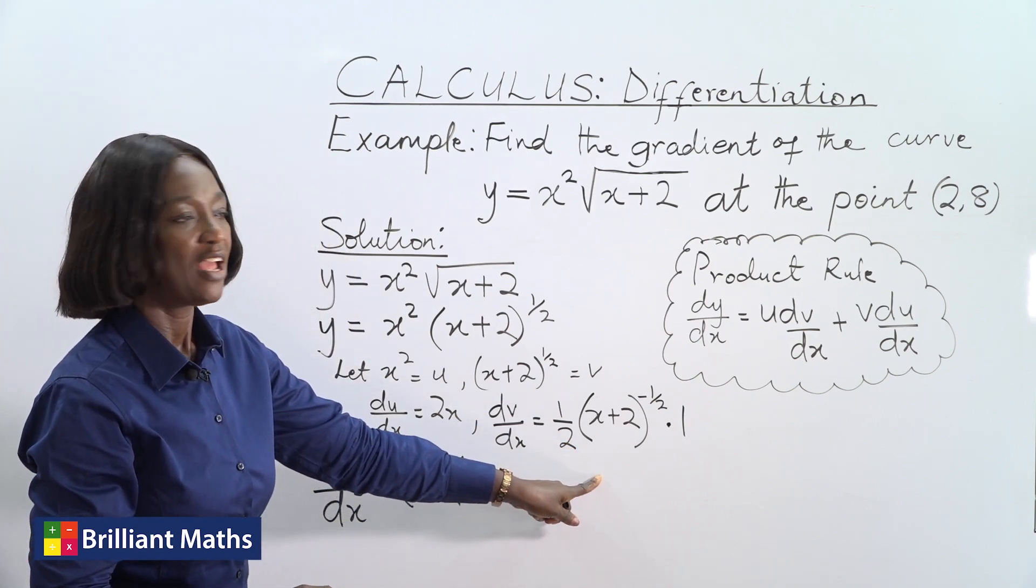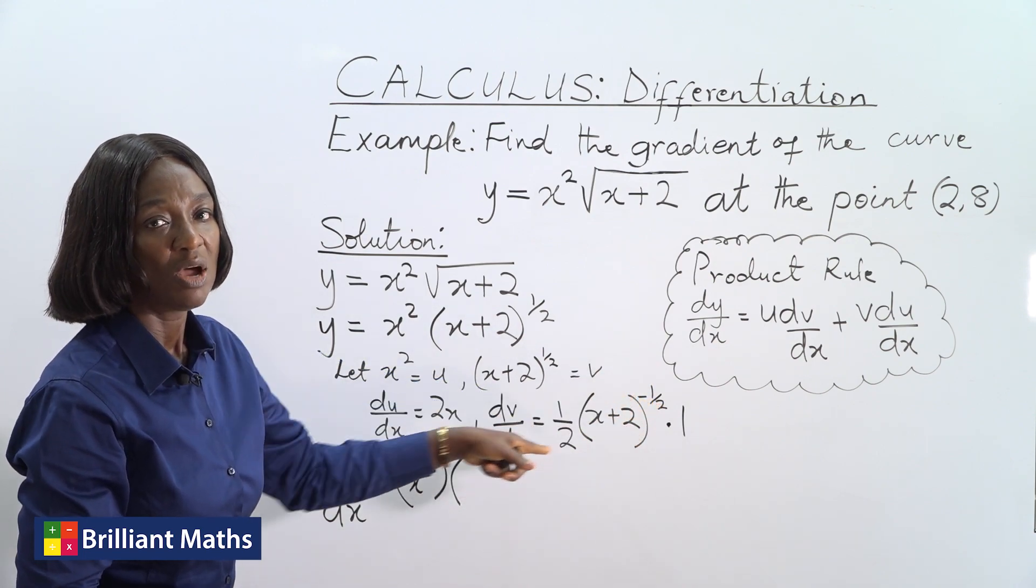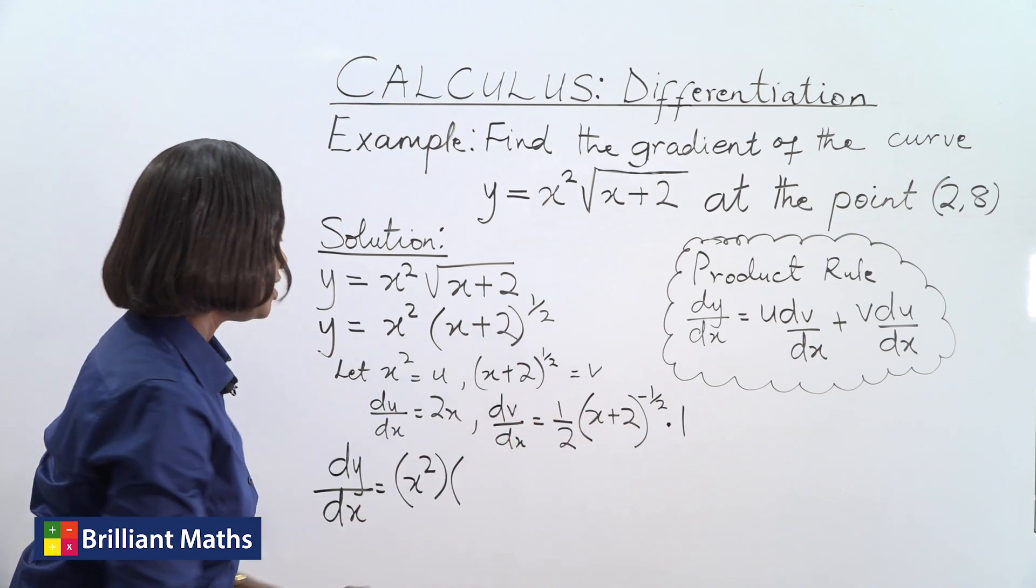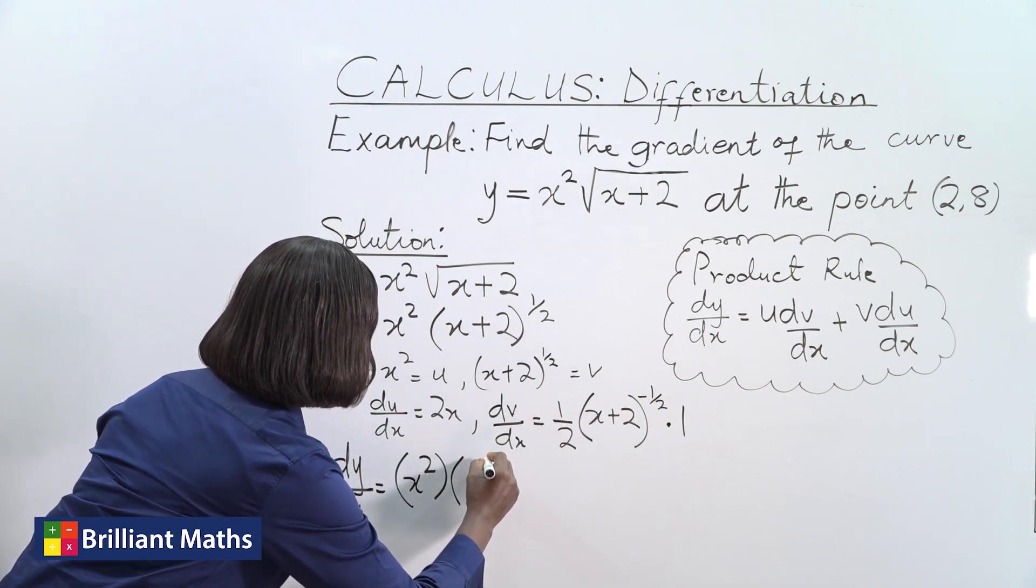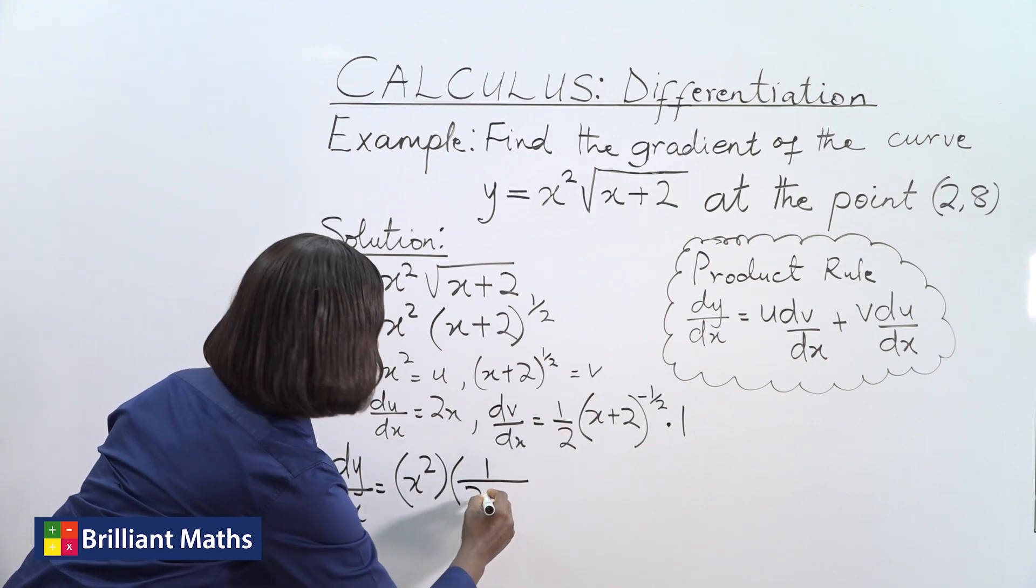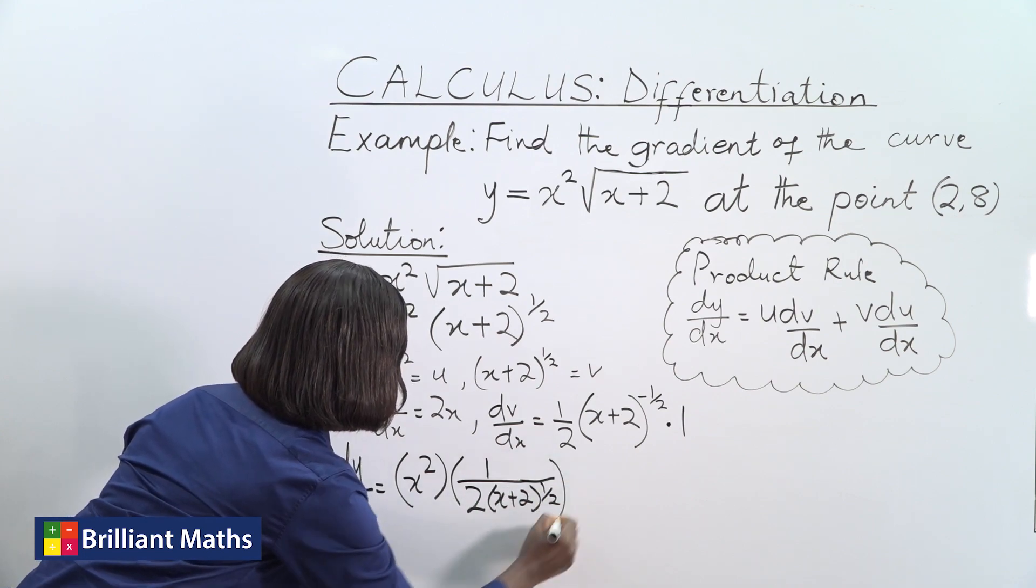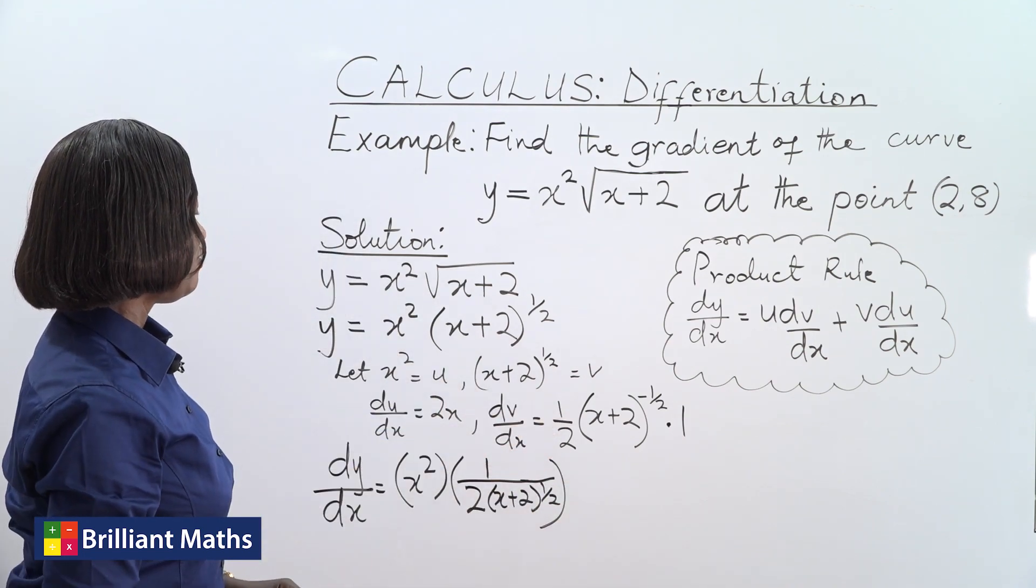Since this is 2 power minus half, I'd like to bring it down as the denominator using indices. So it becomes 1 over 2 times x plus 2 to the power half. So that's our dv/dx.